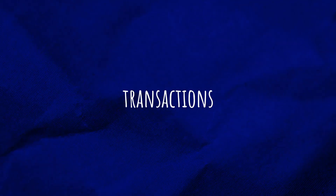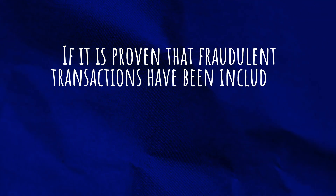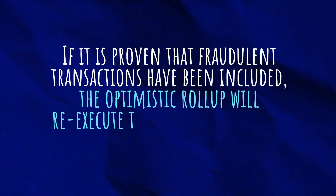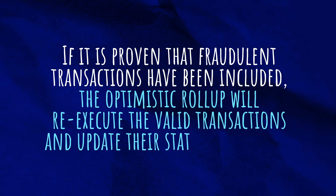Optimistic Rollups assume that all transactions computed off-chain are valid and accurate when posting them to Ethereum without submitting a proof of validity, hence the term optimistic. To combat fraudulent transactions, a challenge period is put in place in which anyone can challenge the transactions posted. If it is proven that fraudulent transactions have been included, the Optimistic Rollup will re-execute the valid transactions and update their state accordingly. If the challenge period passes with no successful challenge, the transactions become finalized.